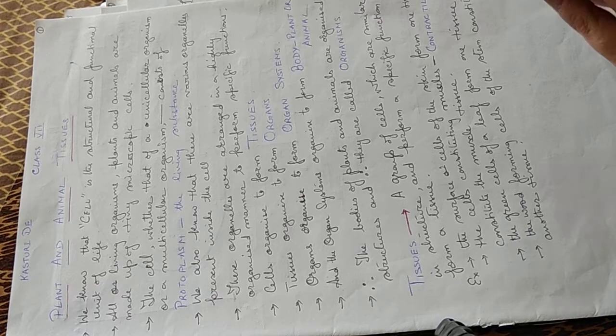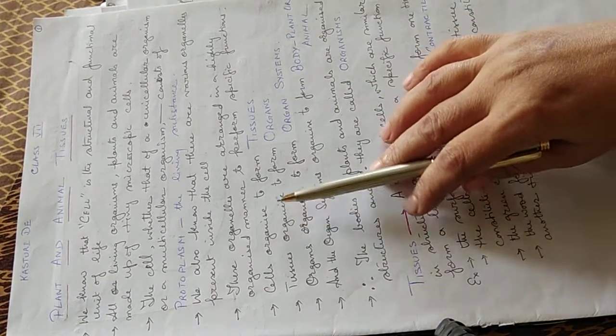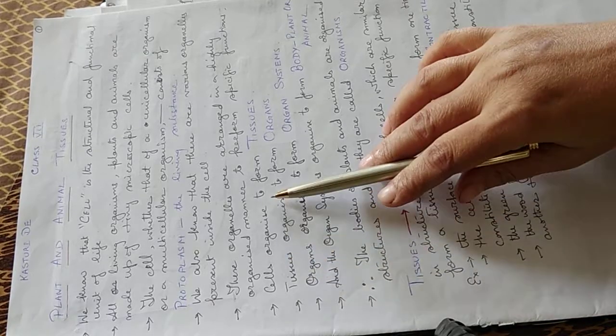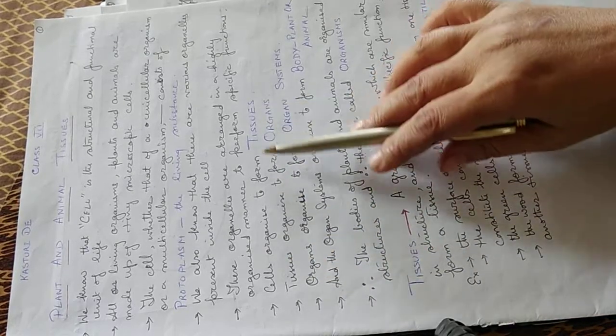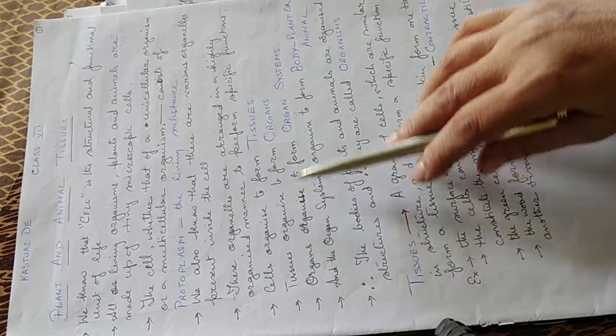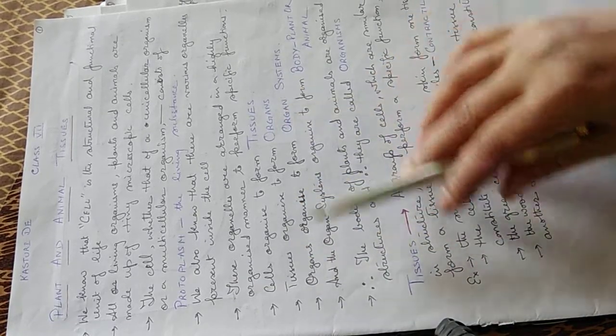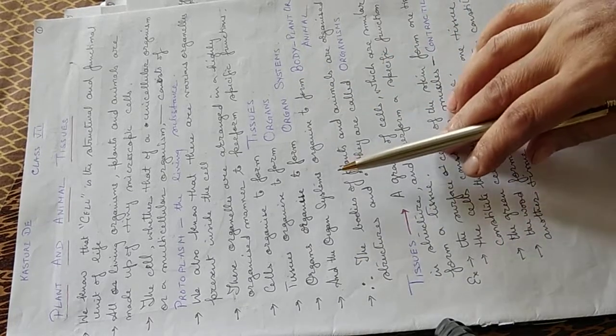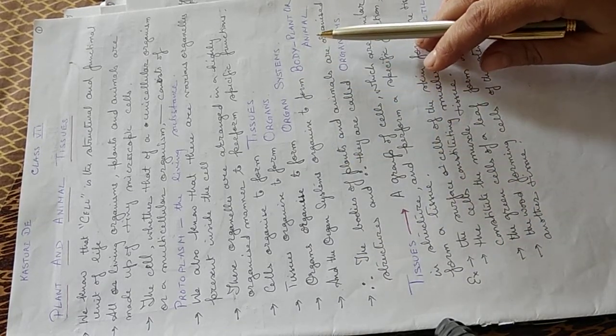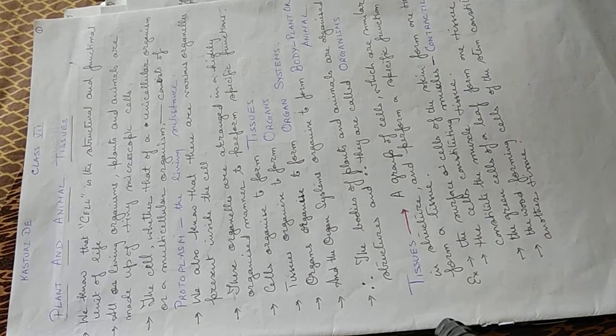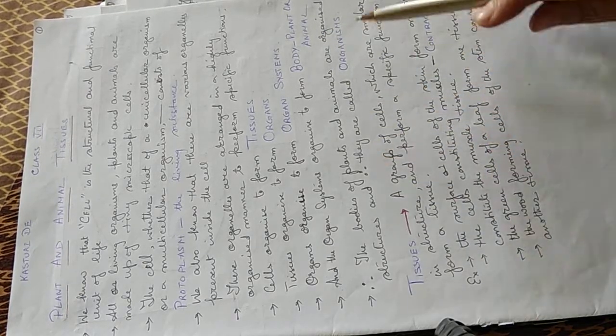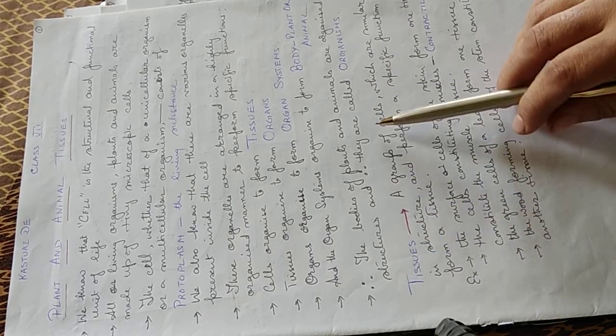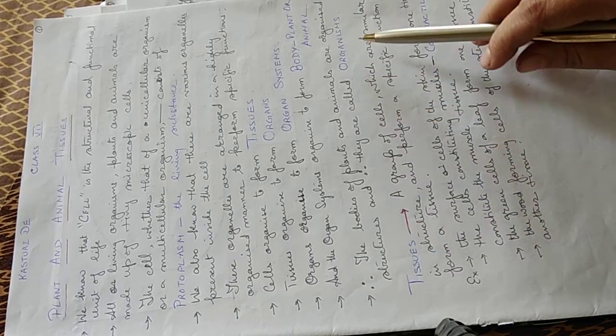These organelles are arranged in a highly organized manner to perform specific functions. Cells organize to form tissues, tissues organize to form organs, organs organize to form organ systems, and the organ systems organize to form the body, that is the plant or the animal body. The bodies of plants and animals are organized structures and are therefore called organisms.